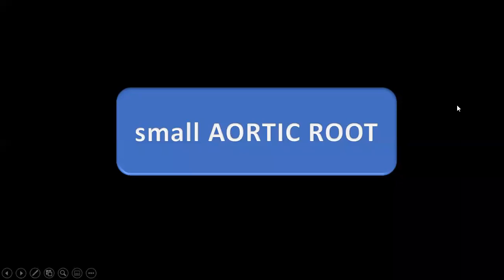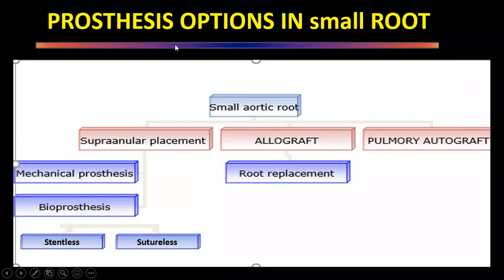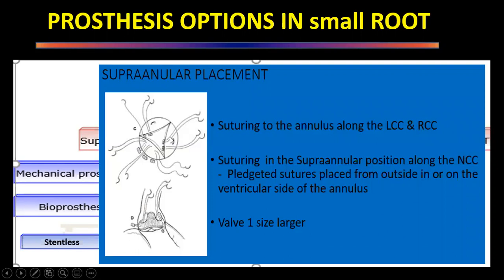The question is: what will you do if the aortic root is small? There are options for placing prostheses in a small root. We can place the prosthesis in the supra-annular position — along the left coronary cusp and right coronary cusp we suture in the regular fashion, but in the non-coronary sinus we take the sutures at supra-annular sites, so the valve is tilted slightly on the non-coronary sinus, allowing us to go up one valve size higher.